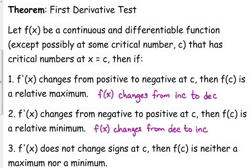If the derivative changes from positive to negative at your critical point, then f(c) is a relative maximum. If the derivative changes from positive to negative, that means the original changes from increasing to decreasing. Positive derivative means increasing original function; negative derivative means decreasing original function. Vice versa, if your derivative changes from negative to positive, that means the original changed from decreasing to increasing — you're going to have a relative minimum.